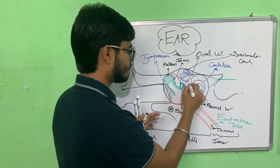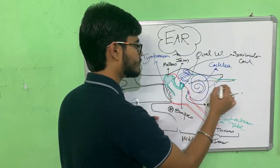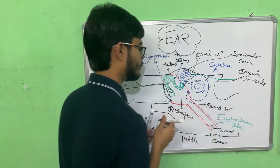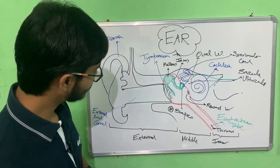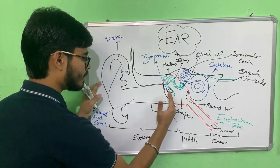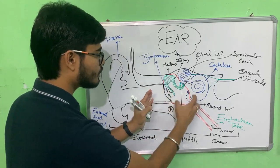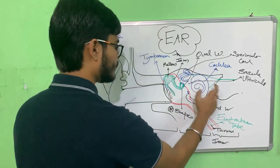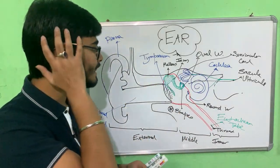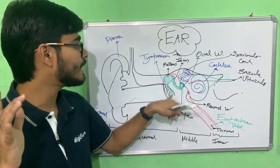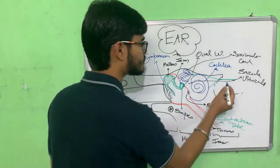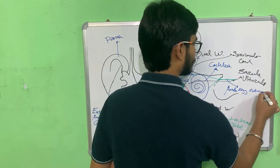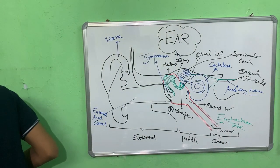The semicircular canals are connected to a stalk which is further connected to the cochlea. That stalk contains two structures known as the saccule and utricle. To summarize the anatomy: from the pinna to the tympanic membrane is the external ear; from the tympanic membrane to the oval and round windows, along with the Eustachian tube, is the middle ear; and the cochlea is present in the inner ear, which is contained within the temporal bone. The green structure connecting to the brain is the vestibulocochlear or auditory nerve.